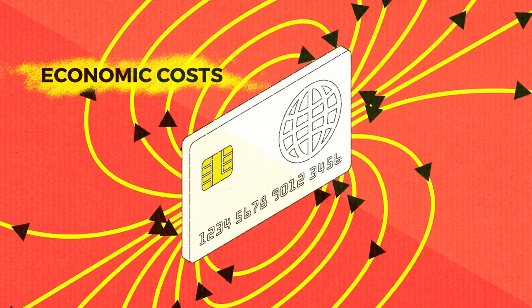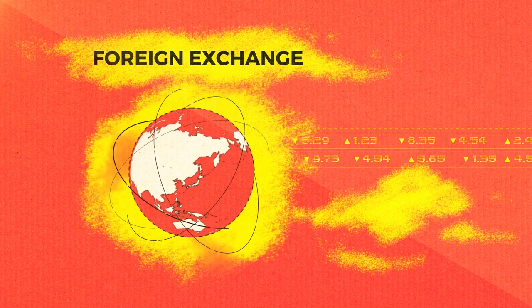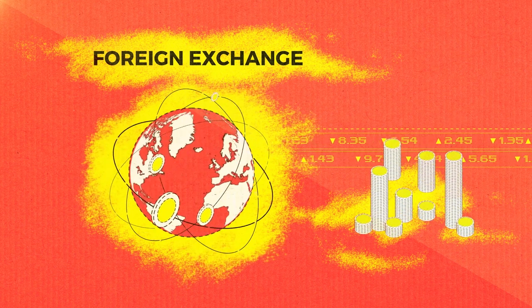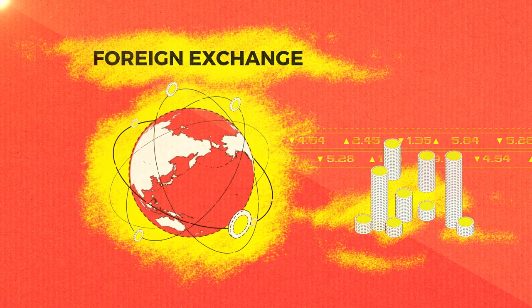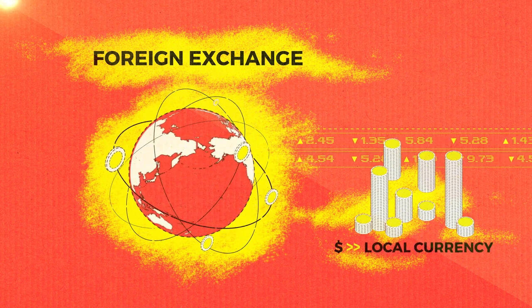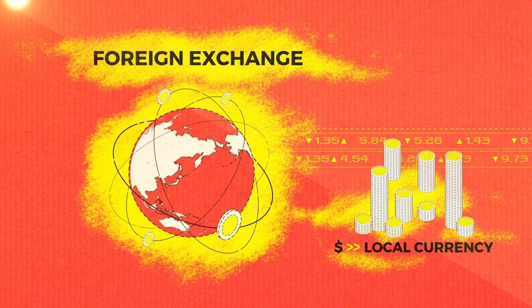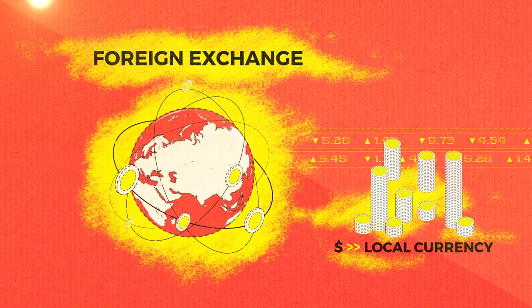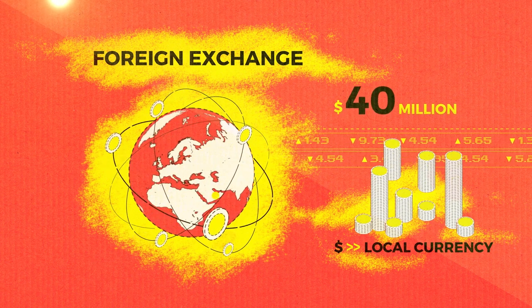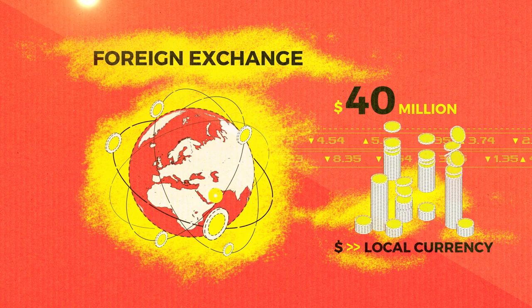Then there are the less obvious economic costs to consider, all of which are a direct or indirect part of the payment cycle. Foreign exchange: incoming funds from donor to agency incur foreign exchange fees, which have to be converted — sometimes via US dollars — to the local currency. These costs can be considerable and are part of the hidden cost of treasury management within the cash cycle. In Yemen in 2017, these forex fees amounted to an excessive $40 million.